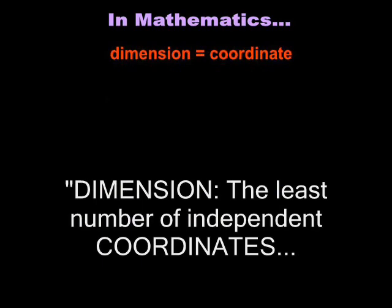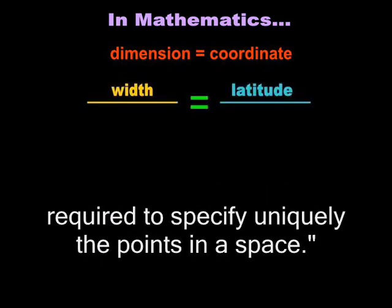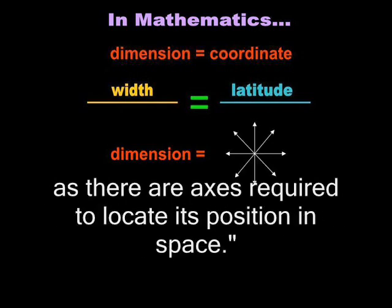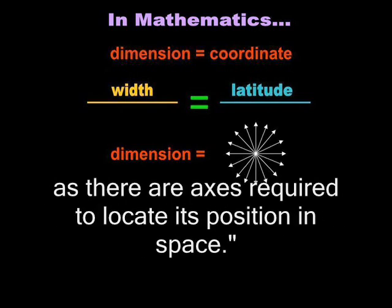Dimension: the least number of independent coordinates required to specify uniquely the points in a space. An object is said to have as many dimensions as there are axes required to locate its position in space.